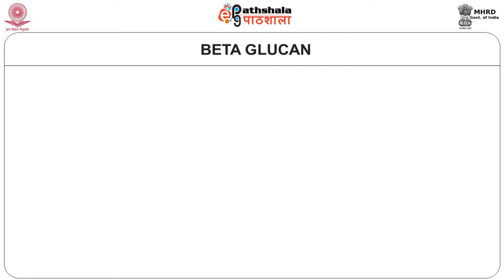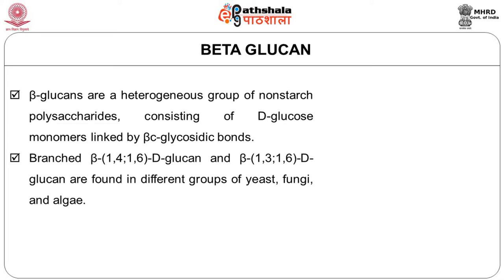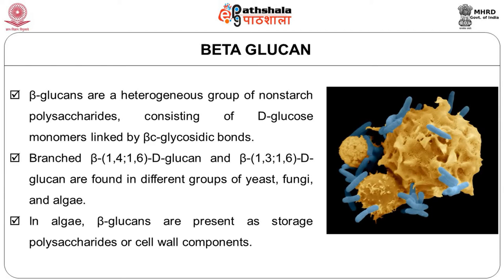The next important component we are going to discuss is beta-glucan. Beta-glucan is a complex molecule — a heterogeneous group of non-starch polysaccharides consisting of D-glucose monomers linked by beta-glycosidic bonds. Beta-glucans are soluble fibers which are effective at achieving and maintaining healthy cholesterol levels and help in managing cardiovascular diseases. The simplest beta-glucans are linear and unbranched beta-1,3 D-glucans seen in prokaryotes and eukaryotes like algae and fungi.